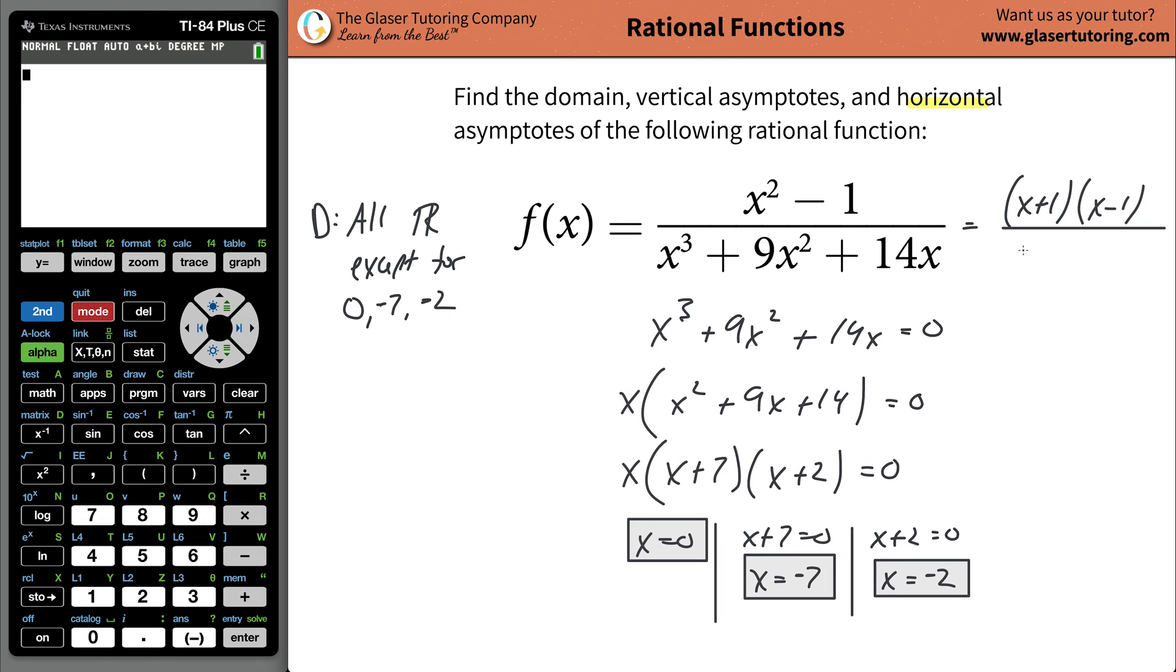So this is a perfect square on the top. So that's just going to be x plus one and x minus one. And then we're going to divide it now by, I already factored this. So I'm not going to go through that whole thing again, but there's going to be x, there's going to be x plus seven, and this is then going to be x plus two.